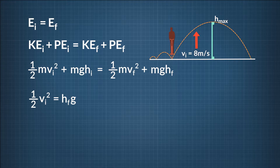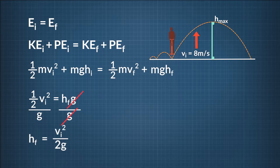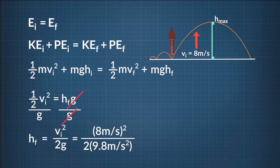In our situation, we want to know the final height — if it is above three meters. So let's rearrange our terms to get an equation that says H final equals something. To do that, we just need to divide both sides of the equation by g. Our final height equals our initial velocity squared divided by two times g, the acceleration due to gravity. Plugging in 8 meters per second for our initial velocity and 9.8 meters per second squared for g, we find our final height is 3.3 meters.